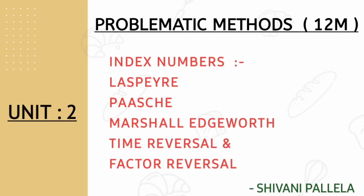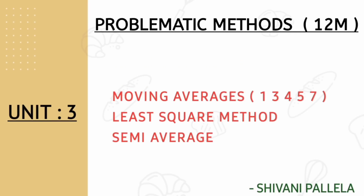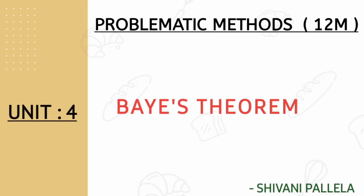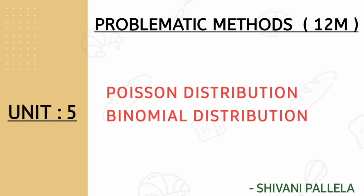From unit number three there are three topics: first is Moving Averages, second is Least Square Method, and third is Semi-Average Method. Moving Averages and Least Square Method are the compulsory questions which you are having in your question papers.